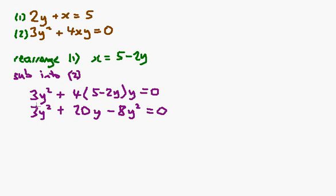So, I've got the 3y squared, I've got minus 8y squared, so that makes negative 5y squared plus 20y is equal to 0.